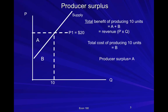Let's take a look at a particular example with producer surplus. The revenue that the firm gets by selling 10 units at $20 is $200, given by price times quantity, or area A plus B. The total variable cost of producing those 10 units is the area under the supply curve. So the producer surplus is triangle A. That is the fundamental way we're going to be calculating producer surplus in all the examples going forward.